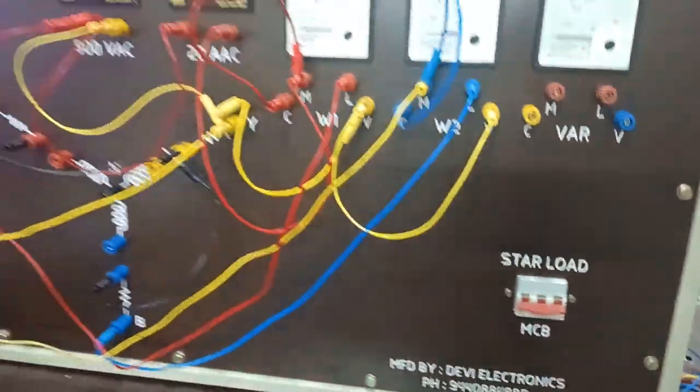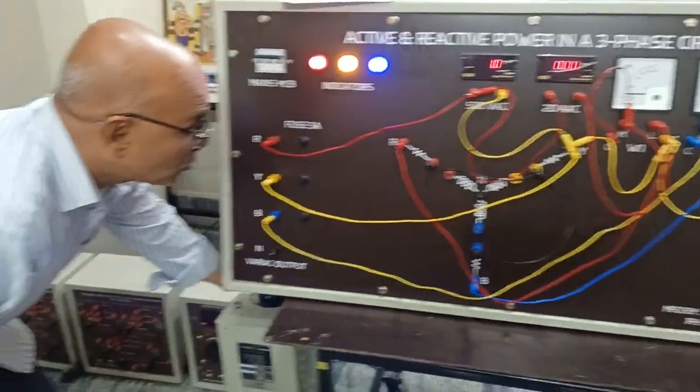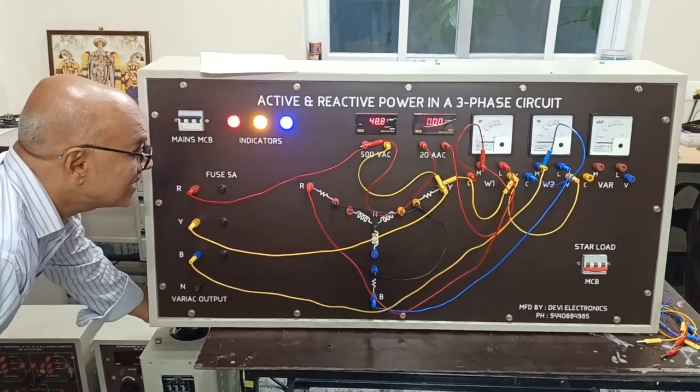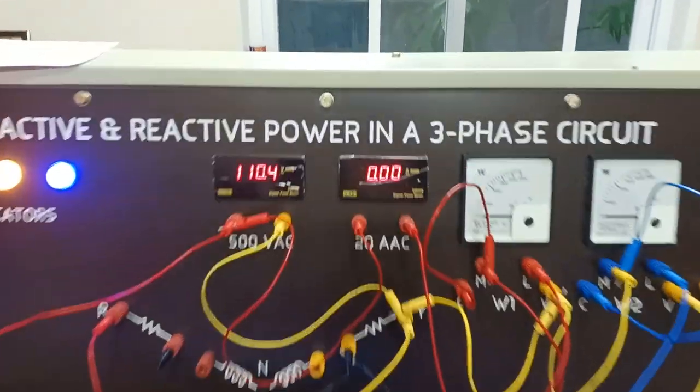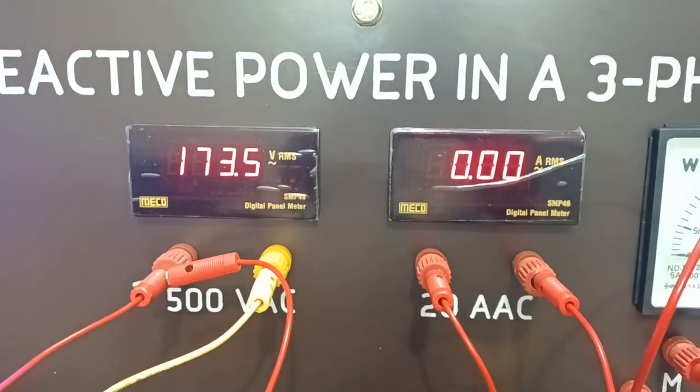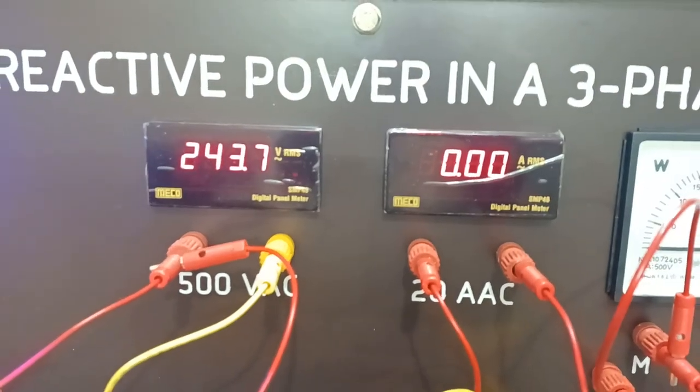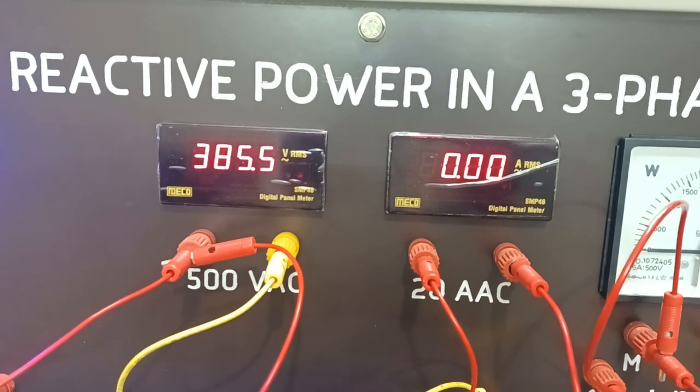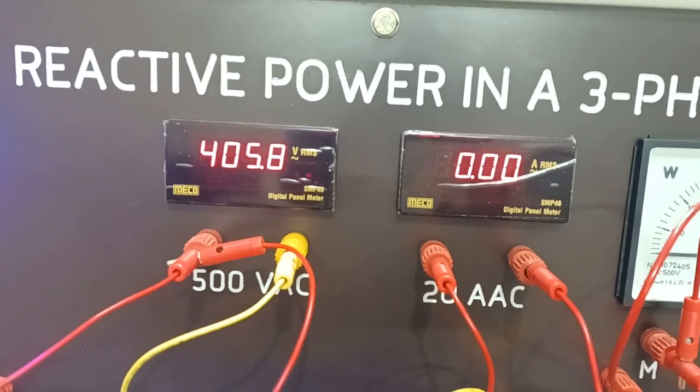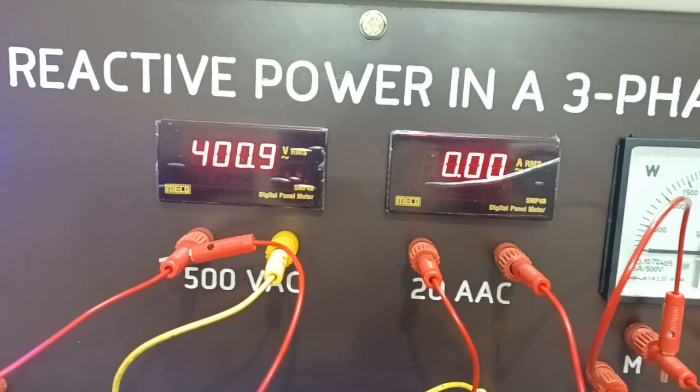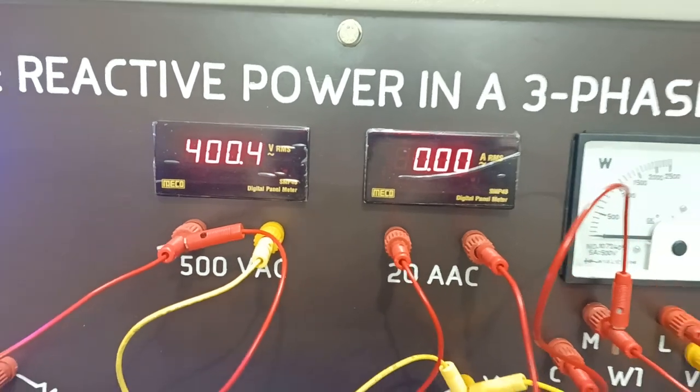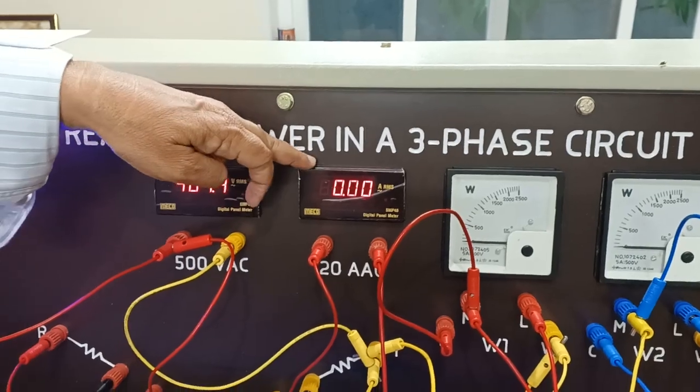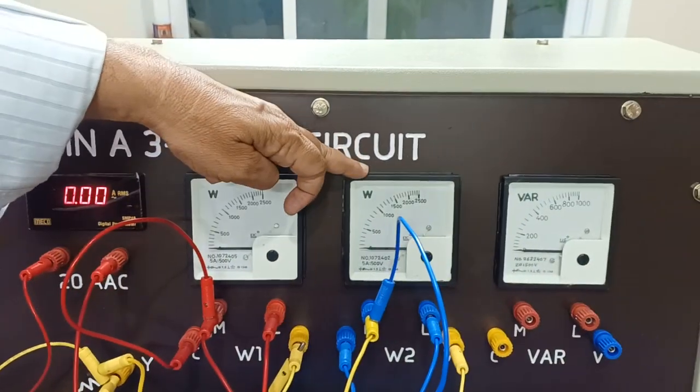By varying the dimmer start and looking at the voltmeter, I am going to adjust to 400 volts. I have 400. As I have not applied any load, the current is 0, W1 is 0, W2 is 0.